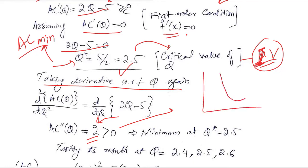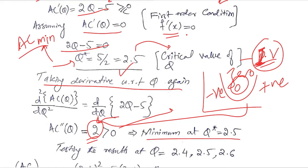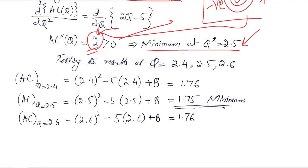A second order derivative of 2 is a positive value, showing that the rate of change of slope is positive — it is initially negative, then zero, then positive. This overall positive result confirms that a minimum is achieved, since minimum occurs when the second order derivative is positive.